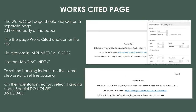The works cited page appears as a separate page after the body of the paper. In MLA style we use a works cited page, and in APA style we use a references page — same concept of listing sources but in a different format. One thing both styles share is that entries are double-spaced, listed alphabetically, and second and subsequent lines are indented. The page is titled Works Cited. To set a hanging indent, use the same step you used to set line spacing, but select Hanging under Indentation and Special.